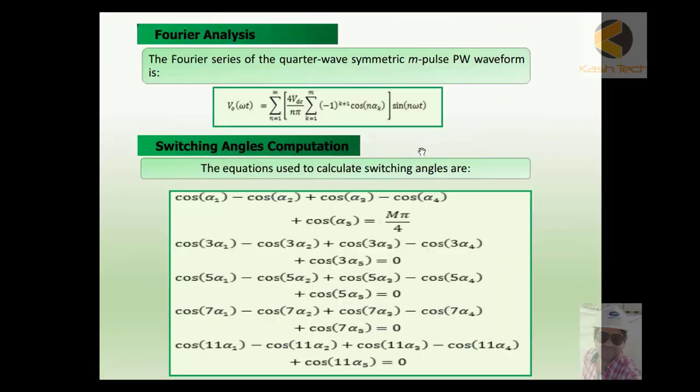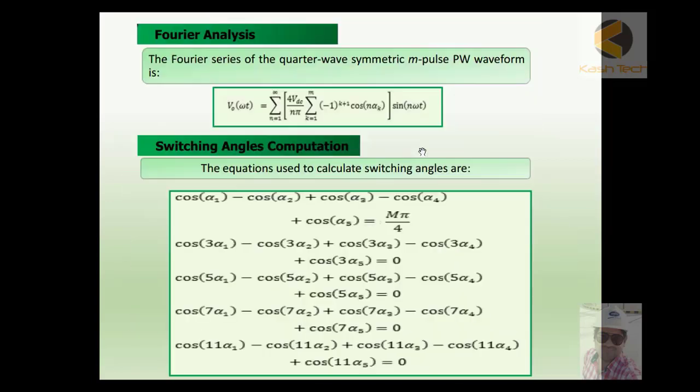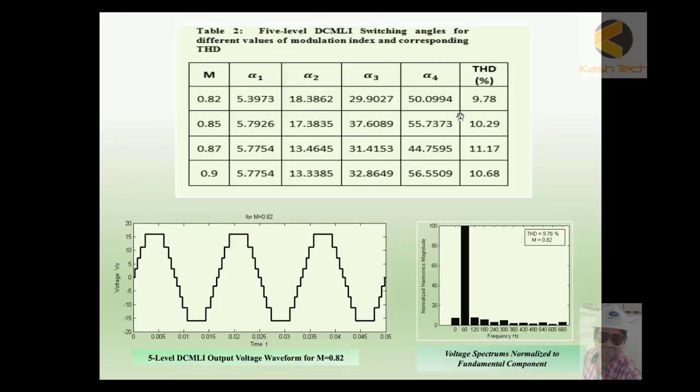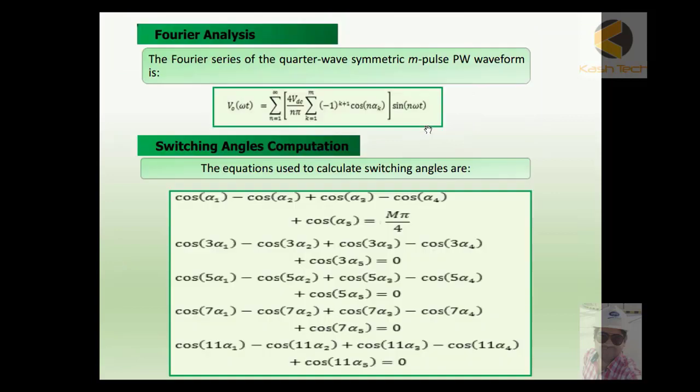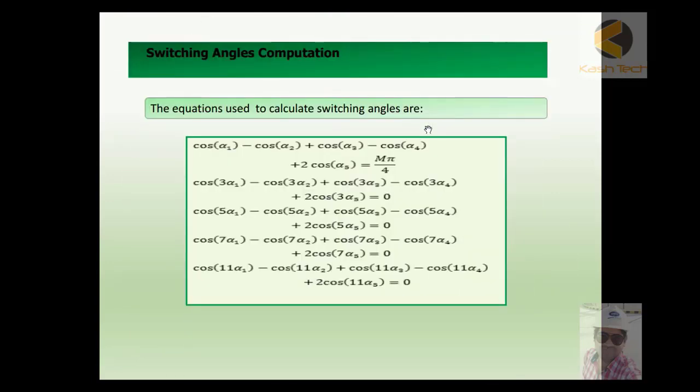If you are combining two techniques, the error will be further reduced. It means if you are using four-stage DCMLI and then you are incorporating PWM, the error will go below 9.78%. This will be touching near about five percent.